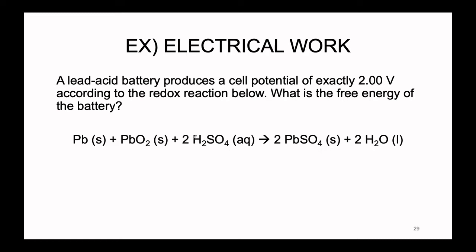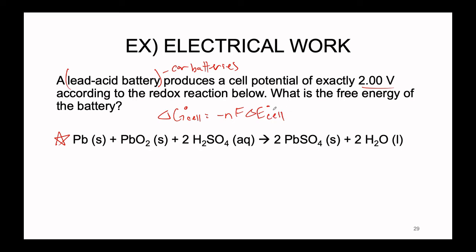Let's study the electrical work of a very common battery — a lead-acid battery, also known as a car battery. A lead-acid battery produces a cell potential of exactly 2.00 volts, according to the redox reaction listed below. We can use all of this information to find the free energy of our battery. Our equation is ΔG° = −N × F × E°(cell), and we are looking for the standard Gibbs free energy.